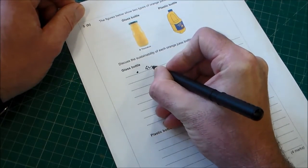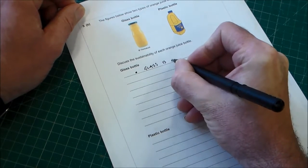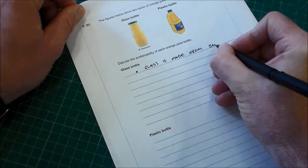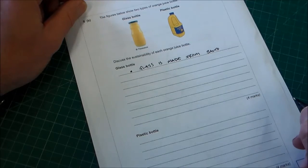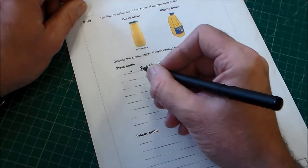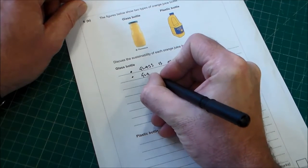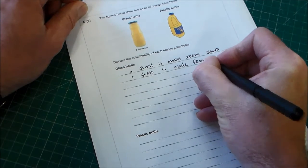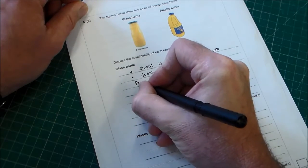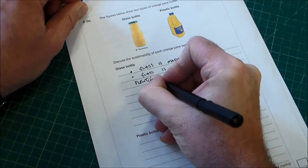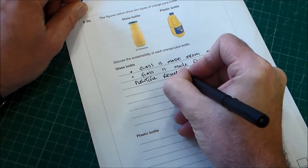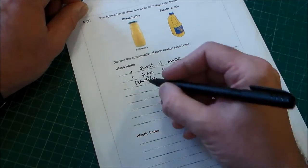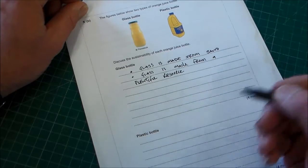What can we say in terms of sustainability about glass? The glass bottle, first one, is glass is made from sand. So that's one mark. We can say too, glass is made from a plentiful resource. So it's made from a plentiful resource. Obviously there's lots of glass, so although it is finite, there's a lot of it about.